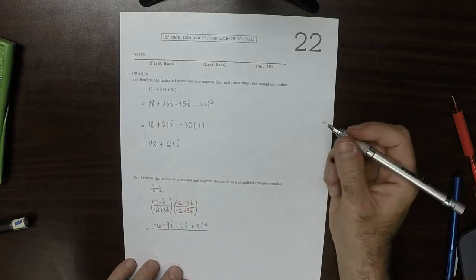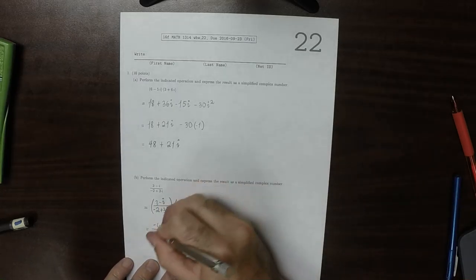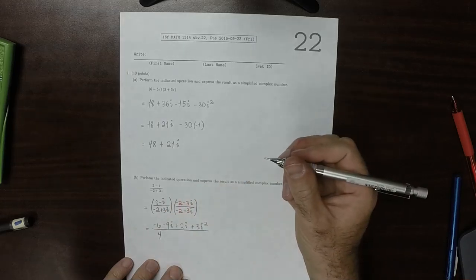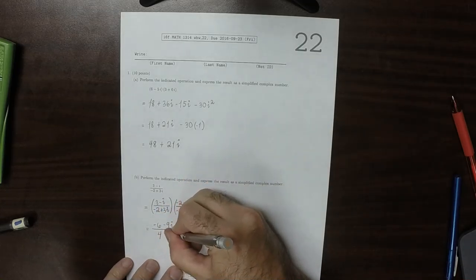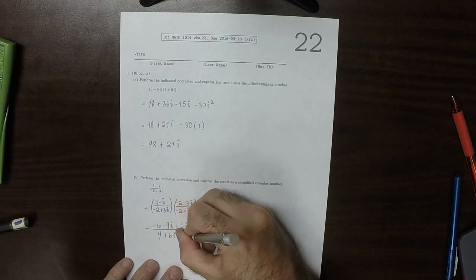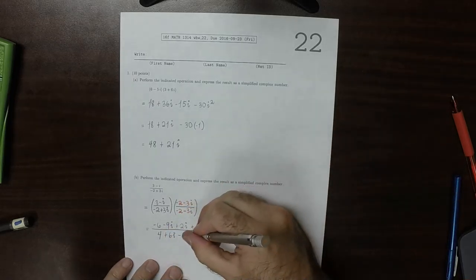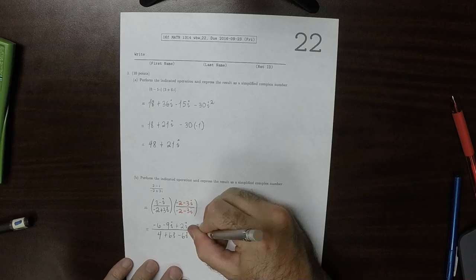In the denominator, that would be 4, then plus 6i minus 6i, and then minus 9i squared.